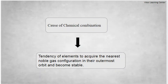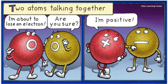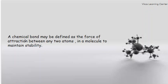Now let us take a look at this picture. You see two atoms talking to one another — one says 'I am about to lose an electron,' and the other asks 'Are you sure?' In the next step, one atom loses an electron and attains a positive charge, while the other gains one electron and attains a negative charge. Opposite charges attract each other, generating a force of attraction that leads to the formation of a bond between these two atoms. We call this bond a chemical bond, which can be defined as the force of attraction between any two atoms in a molecule to maintain stability.